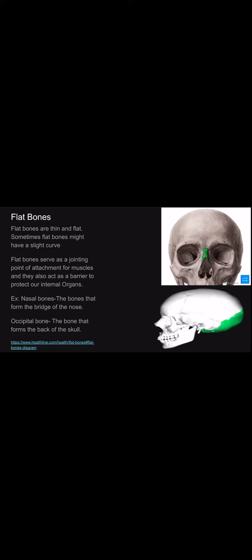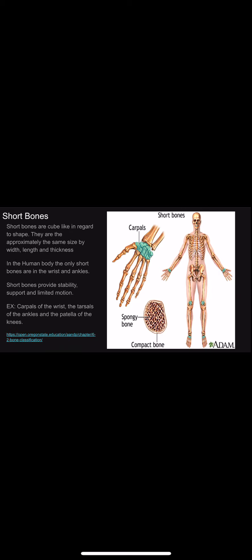Flat bones are flat and thin, and sometimes might have a slight curve. Flat bones are a joining point of attachment for muscles, and they also act as a barrier to protect our internal organs. Examples of this are the nasal bones that form the bridge of the nose, the occipital bone that forms the back of the skull, and also the ribcage.